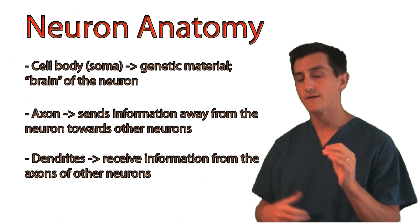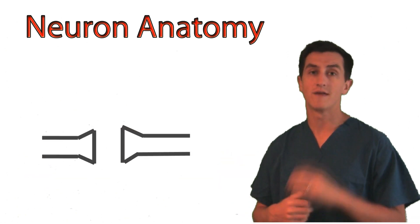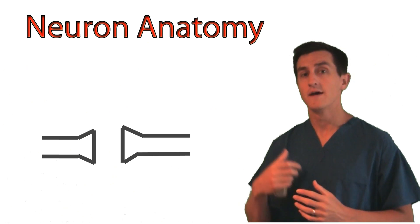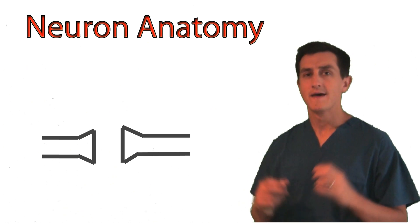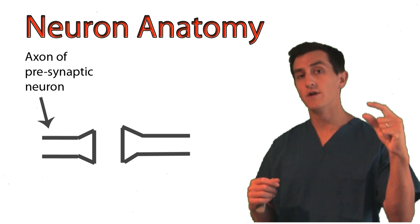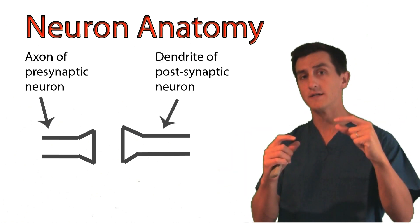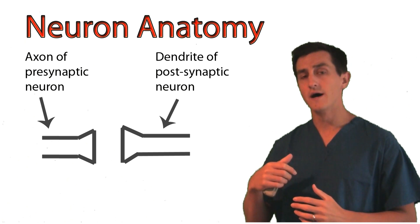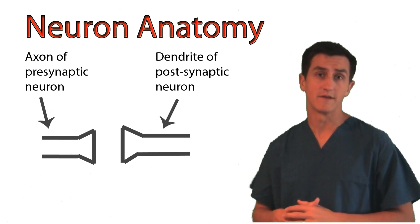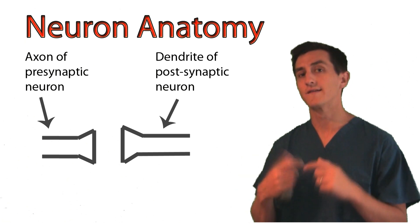Now what I want to do is zoom in on one of those axon-dendrite connections and talk a little bit about what actually happens there. That point where the axon of one neuron, known as the presynaptic cell, connects with the dendrite of another neuron, known as the postsynaptic cell, is an area called the synaptic cleft.